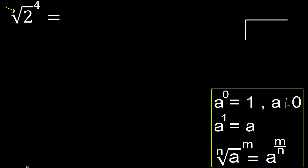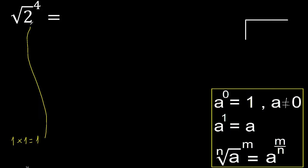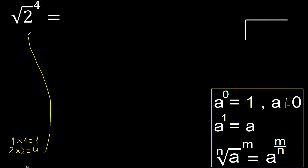There is no number, therefore it is 2. Two numbers that multiply to give 2: 1 multiplied by 1 is 1. Next, 2 multiplied by 2 is 4. There is no number.